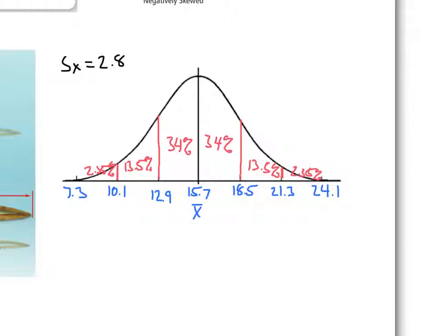Using this, we can find different information. What percentage of the male population of these eels would you expect to be between 10.1 and 18.5 inches long? You just add those percentages up: 13.5 plus 34 plus 34 equals 81.5%. You would expect 81.5% of the population to be between 10.1 and 18.5 inches long. That's all we're doing with this.